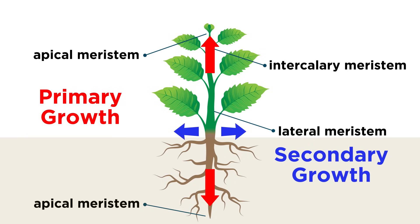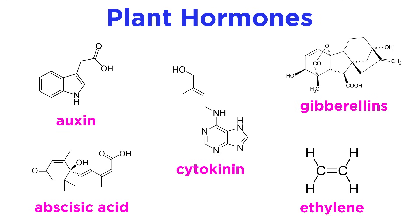So that covers the basics regarding types of plant growth and the hormones that regulate them. With hormones, we have begun to discuss important chemicals that are found in plants, so next up, let's talk about another important group of plant chemicals: pigments.